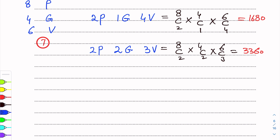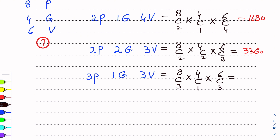Next option is: 3 pianists, 1 guitarist, 3 violinists. So we calculate 8C3 × 4C1 × 6C3, and the answer we get is 4480.